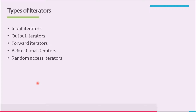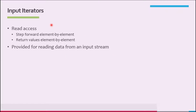There are five types of iterators: input iterators, output iterators, forward iterators, bidirectional iterators, and random access iterators. In the next few sections, we describe these iterators. Let's start with the first one — input iterators.